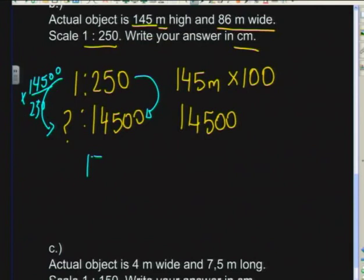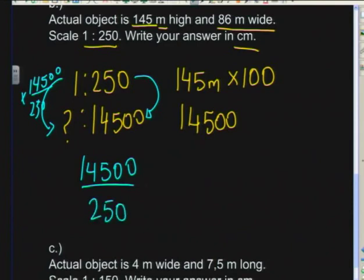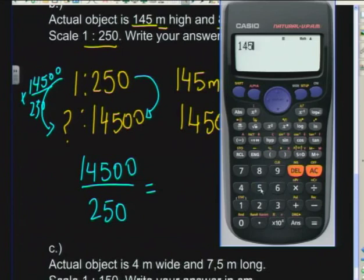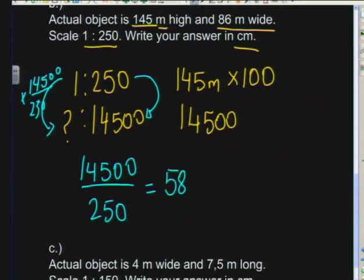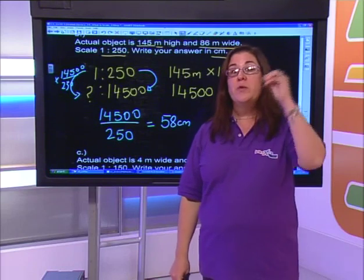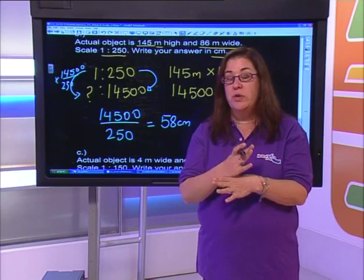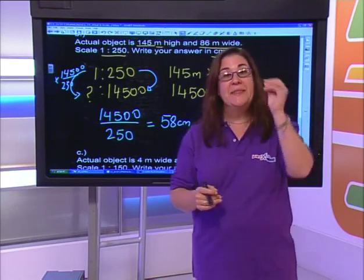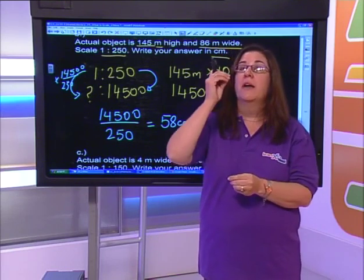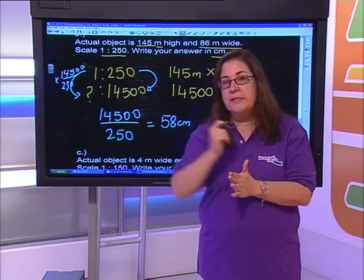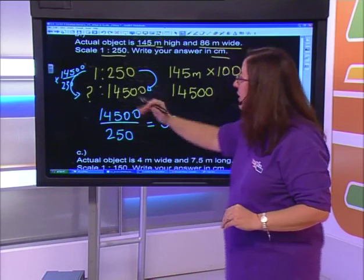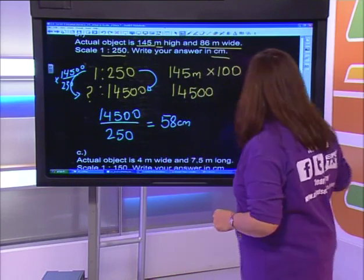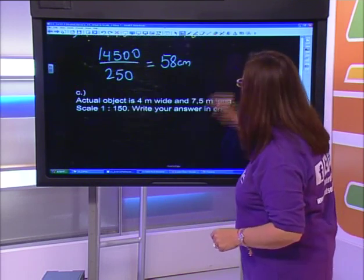By now you should realize: when you have the real life value, you divide it by the scale number; when you have the map value, you multiply it by the scale number. But if you keep using ratios you don't need to memorize that fact. For the last one: the actual object is 4 meters wide and 7.5 meters long, scale 1 to 150, answer in centimeters. Convert 4 meters to 400 centimeters, then 400 ÷ 150 = 2.67 centimeters.